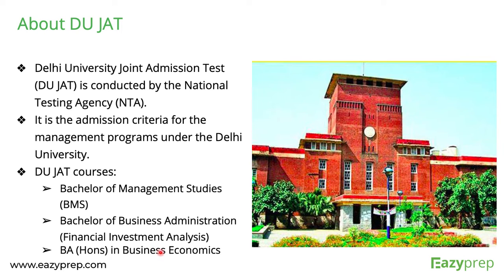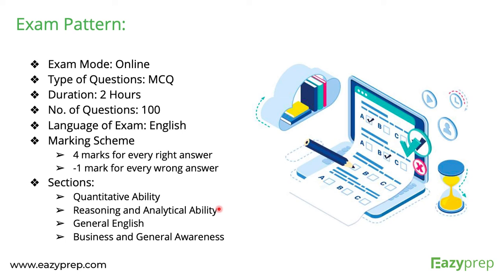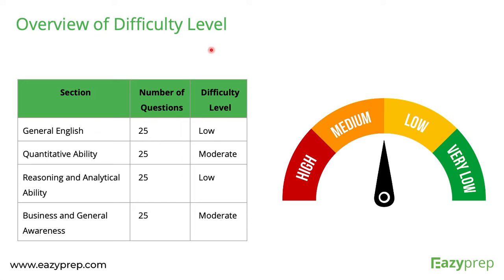The exam is online — a center-based online exam. The overall duration is two hours and there are 100 questions. If you answer every question correctly you get four marks, and if you answer any question wrongly you get negative one mark. There are four sections: Quantitative Ability, Reasoning and Analytical Ability, General English, and General Awareness.